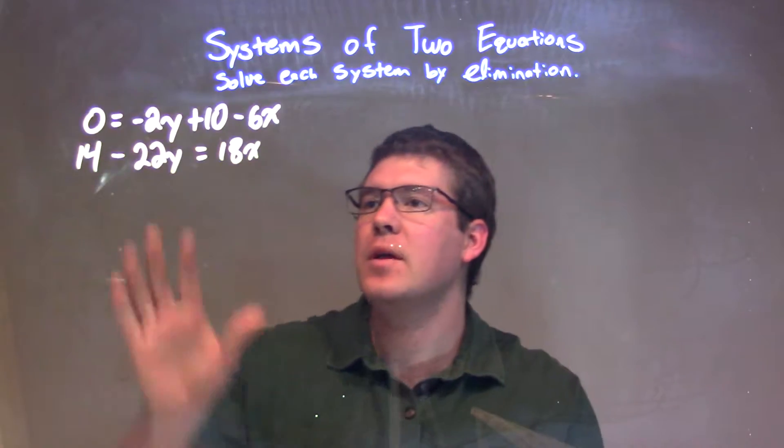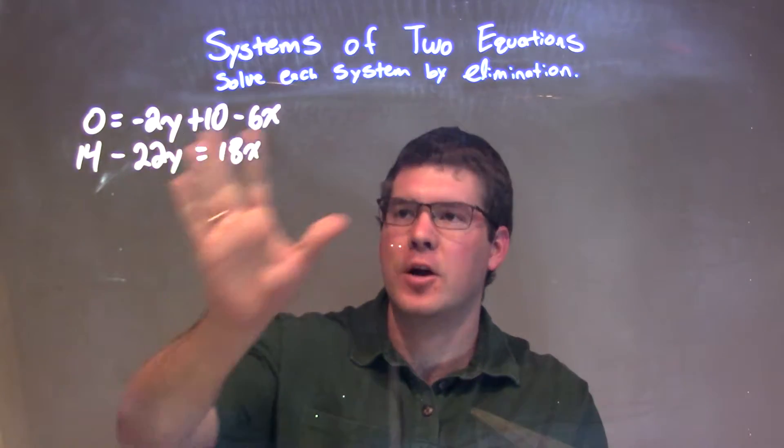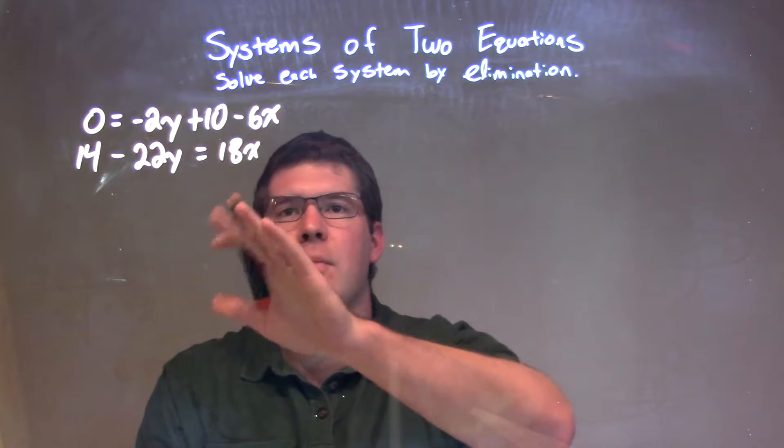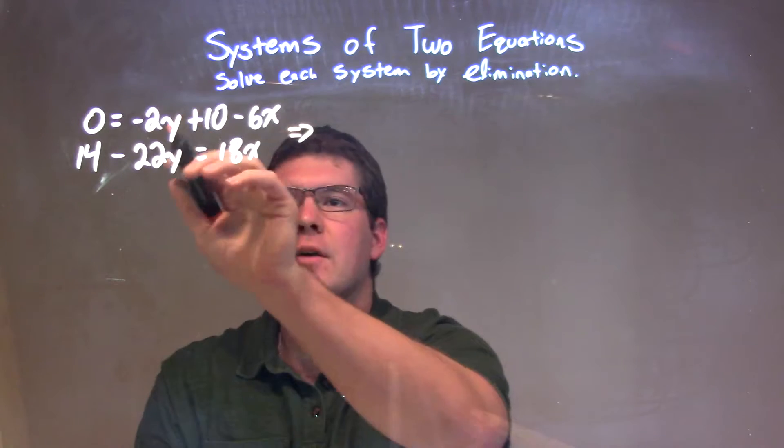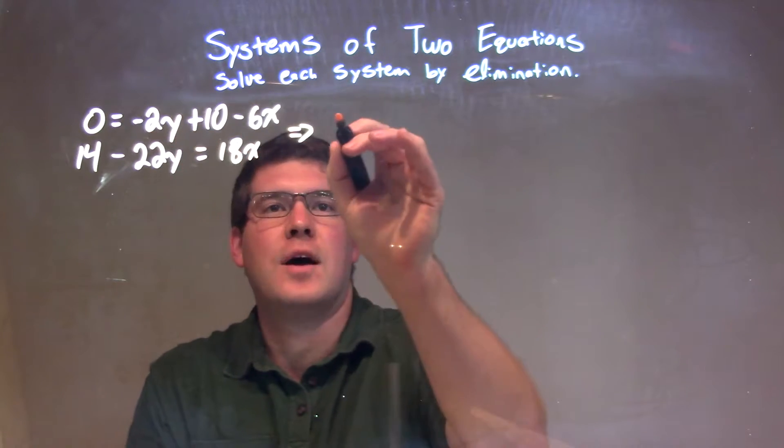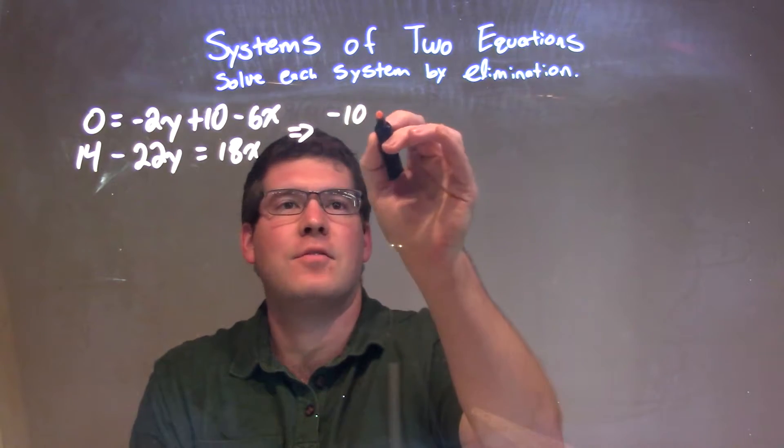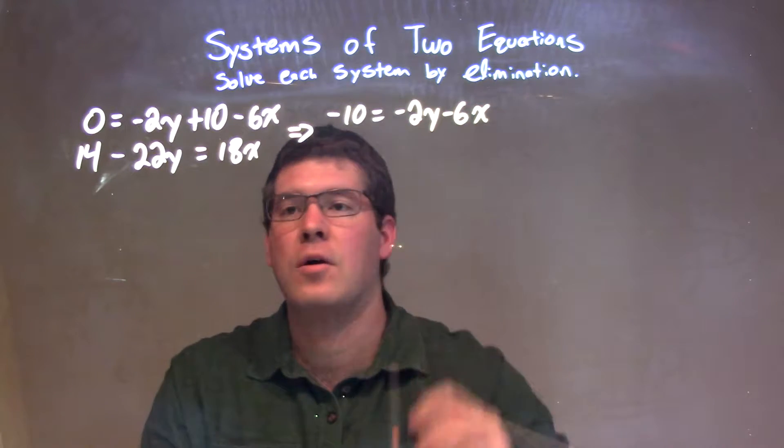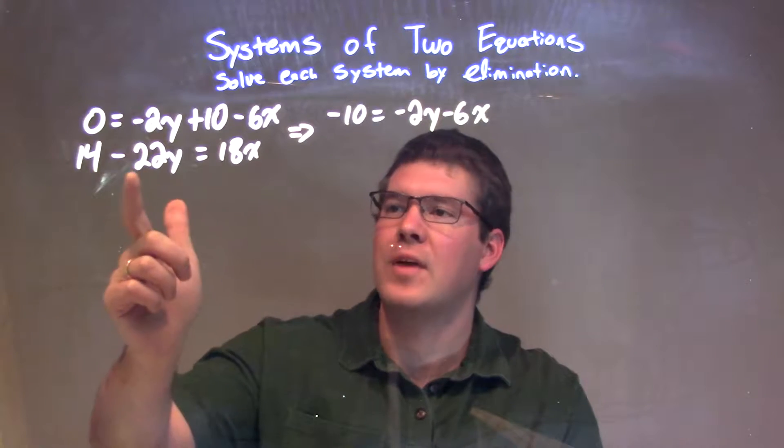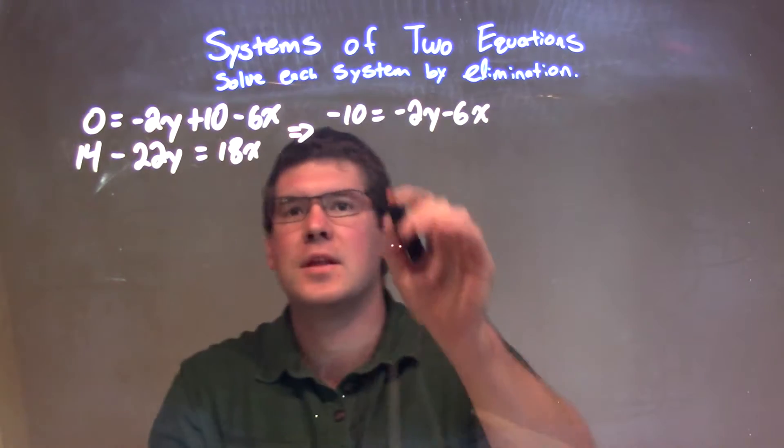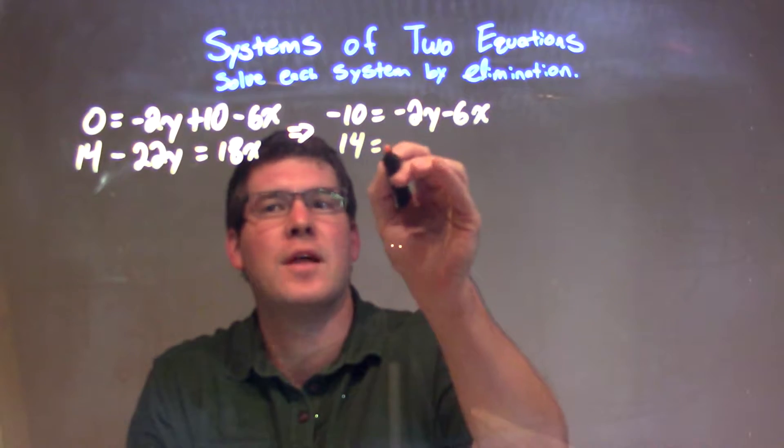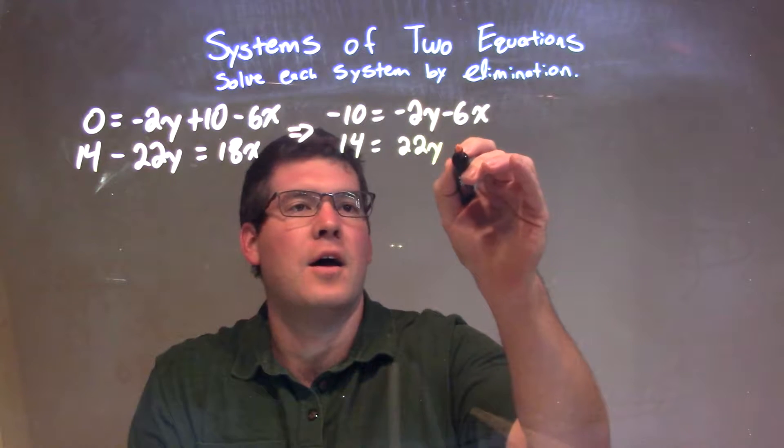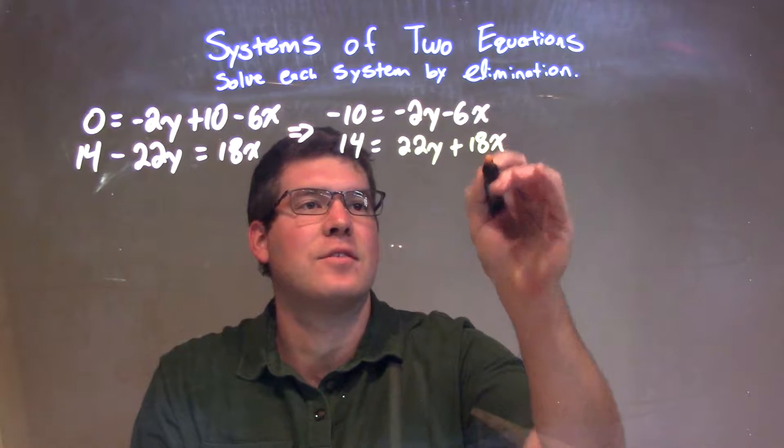What I'm going to do is rewrite this to have all the variables on one side, all the numbers on the other. Numbers on the left, variables on the right. When we rewrite this, I'm going to subtract 10 from both sides, giving me negative 10 on the left equals negative 2y minus 6x on the right. This one here, I'm going to add 22y to the right, giving me 14 on the left and positive 22y plus 18x on the right.